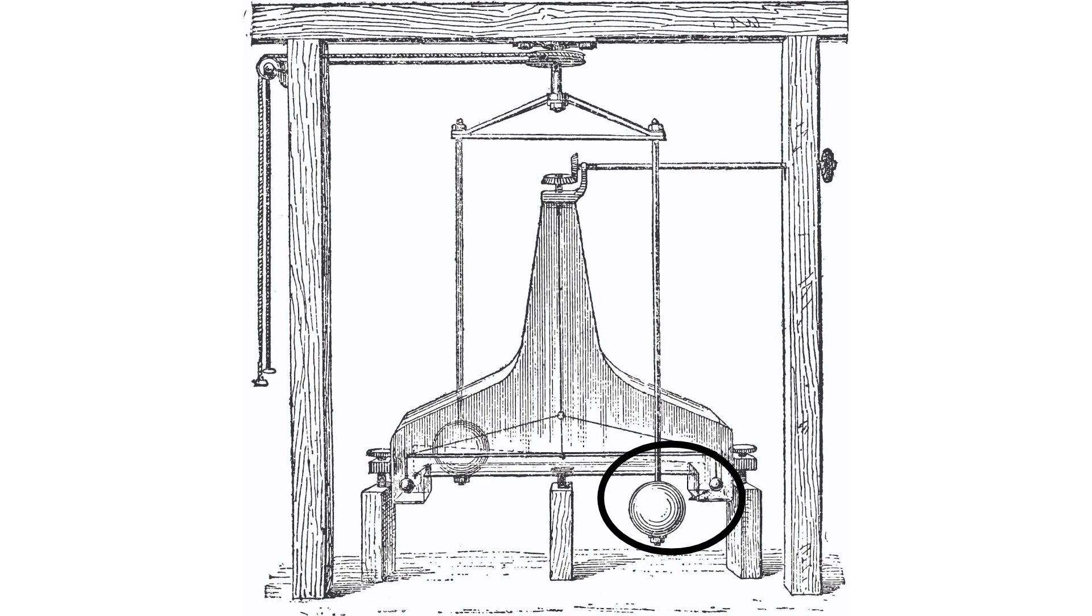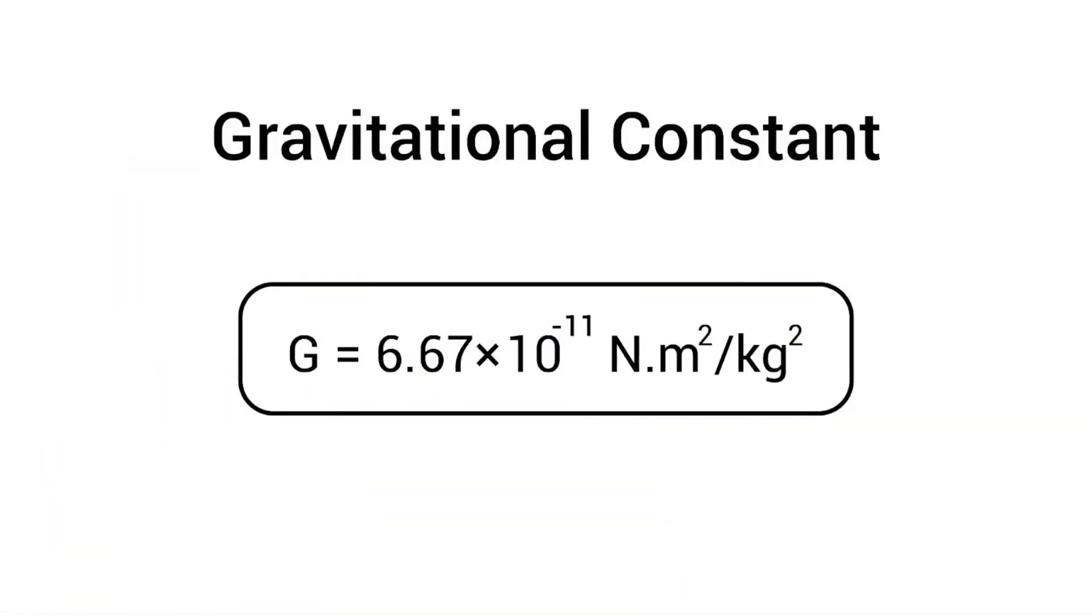And he actually made this symmetrical so on the far side there was another two spheres also being attracted to each other. This caused the whole contraption to twist up at the top. And based on how much it twisted and the masses, he was able to figure out the gravitational constant. It turns out it's 6.67 times 10 to the minus 11th newtons meters squared per kilogram squared. You got that? That is a lot.